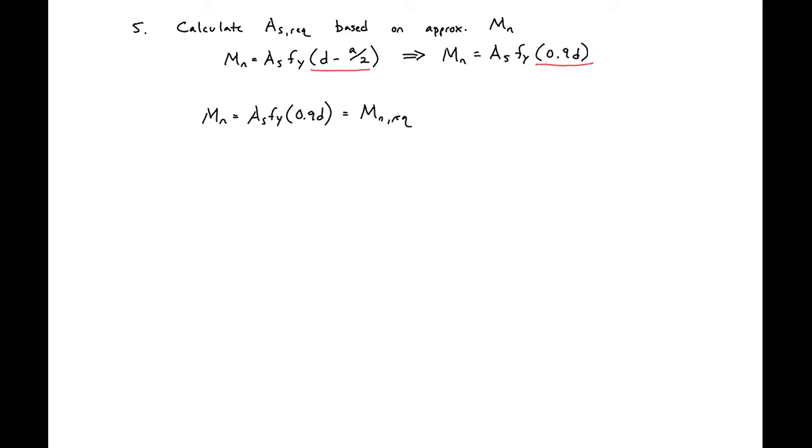We can solve this expression for AS, and we'll now call this AS required, which will just be our MN required divided by FY times 0.9 D. Plugging in our values, we had our MN required is 8,400 kip inches, divided by our FY which is 60 ksi times 0.9, and then our D which we found in our previous step to be 27.4 inches. We can calculate our AS required to be 5.68 square inches.